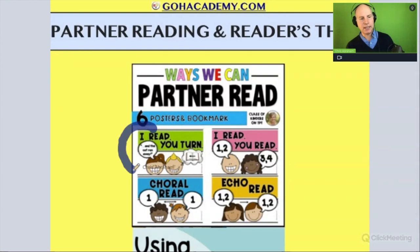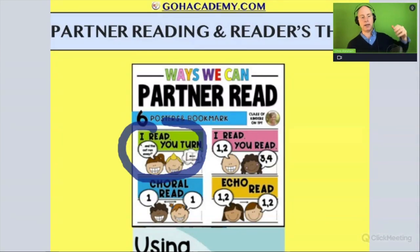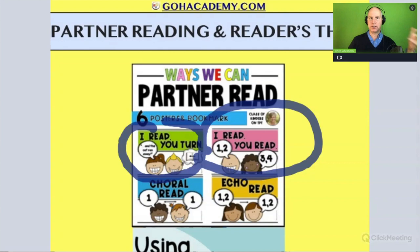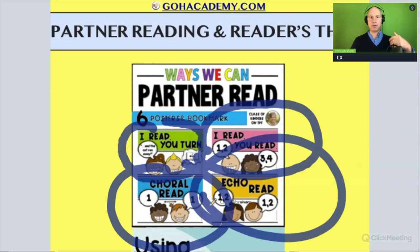With partner reading, there are a couple of different activities you can do that promote fluency. There's the 'I read, you turn' format where one student reads and the other turns the page. You could also alternate — I read sentences one and two, you read sentences three and four, taking turns modeling and listening. Or you do choral reading — reading the sentences at the same time — or echo reading where I read sentences one and two, then you read sentences one and two.